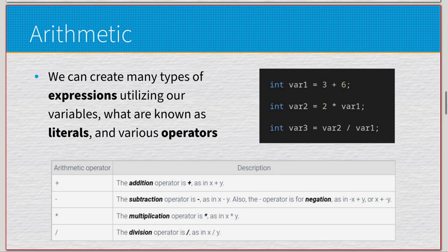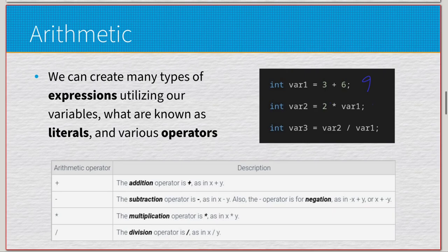For arithmetic we have addition, subtraction, multiplication, and division. For example, 'int var1 = 3 + 6', so var1 equals 9. Then 'int var2 = 2 * var1' — two times nine — so var2 equals 18. And if var3 = var2 / var1, that's 18 divided by 9, so var3 is 2.